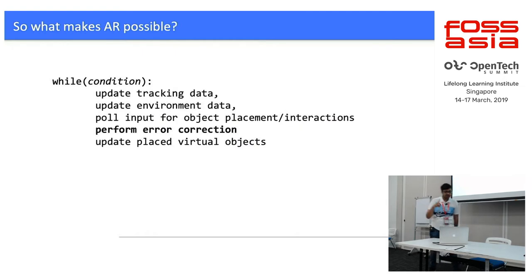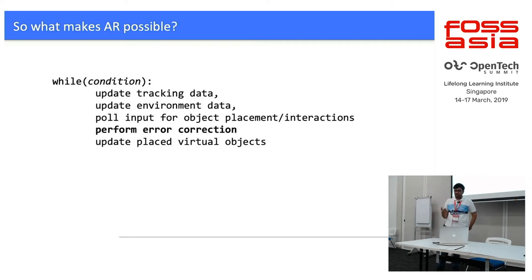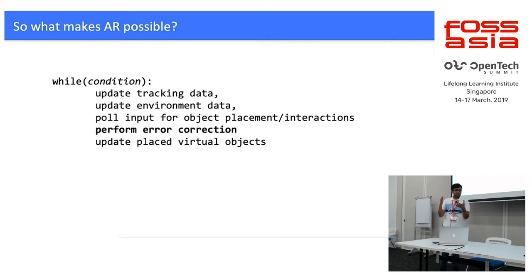Going back to our algorithm, performing error correction is an important added step — it acts as a form of feedback loop to refine the movements.